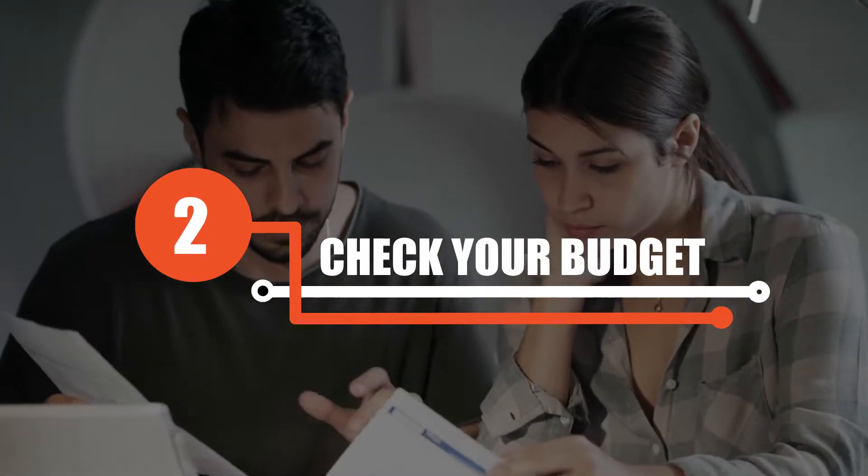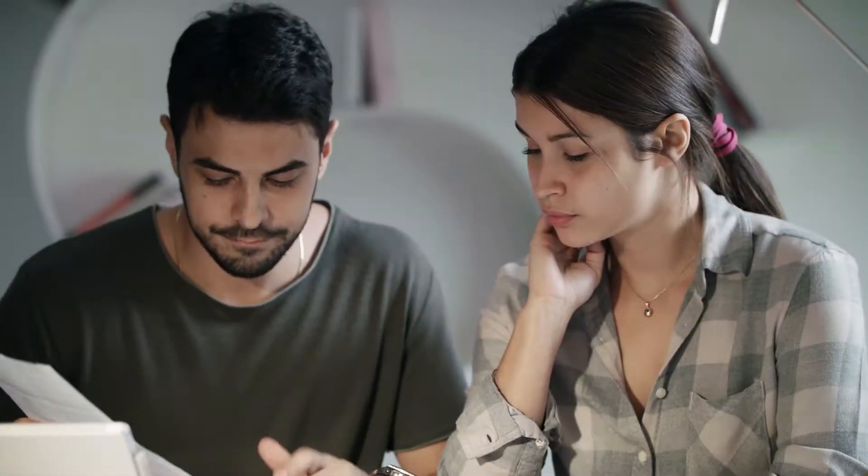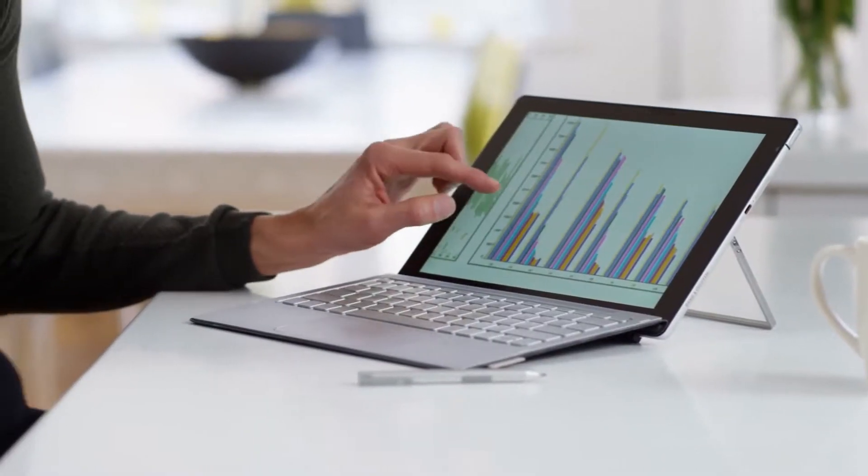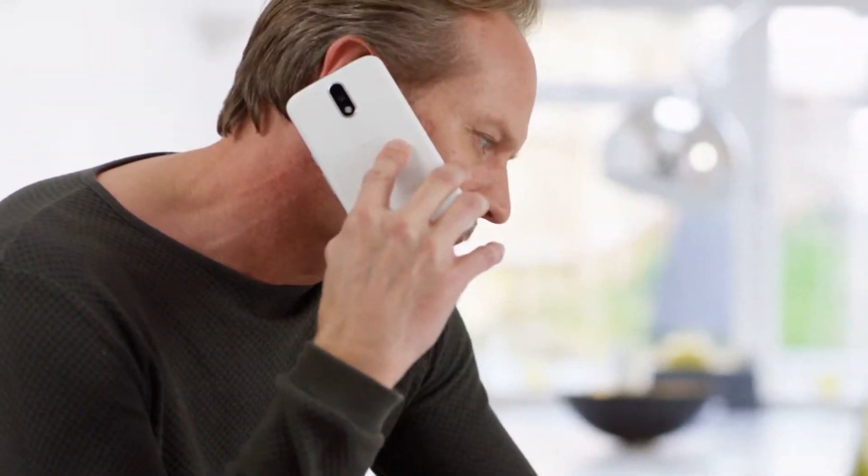2. Check your budget. Robotic process automation costs vary, but once you know your goals and your capabilities, you can understand when the budget will allow for robotic process automation programming to begin.